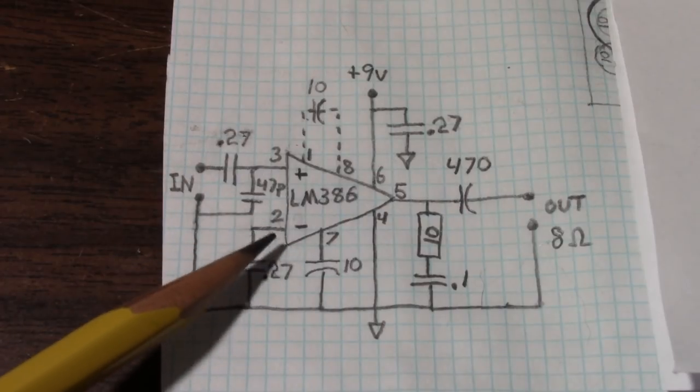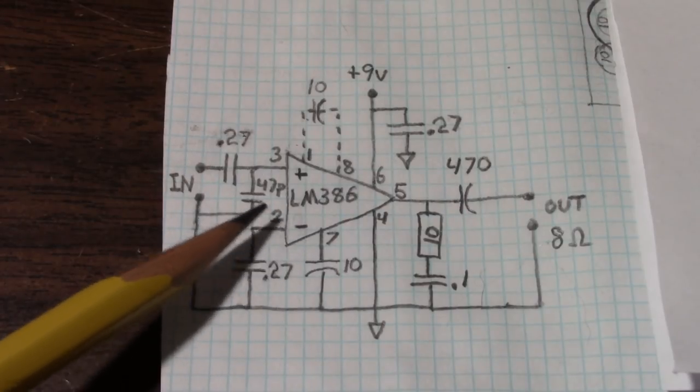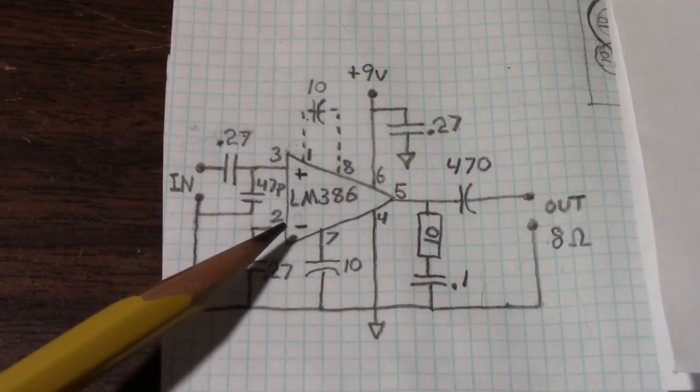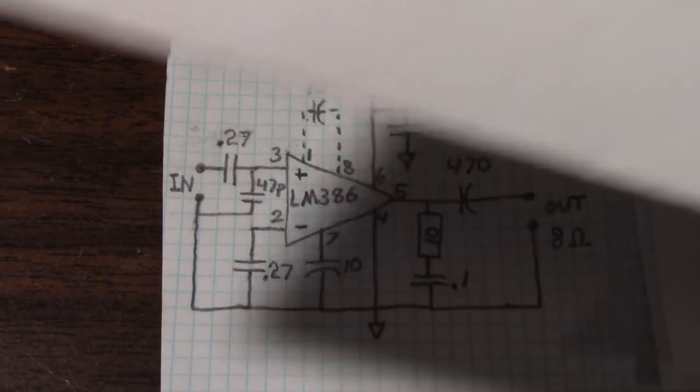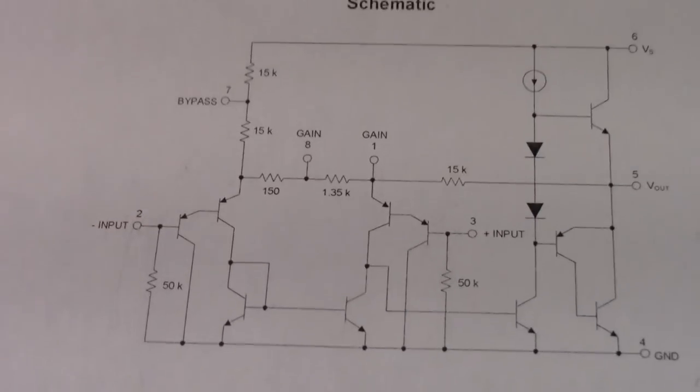And the third thing I'm doing is instead of shorting the inverting input to ground, I'm connecting it to ground through this capacitor. And here is the reason for doing that.